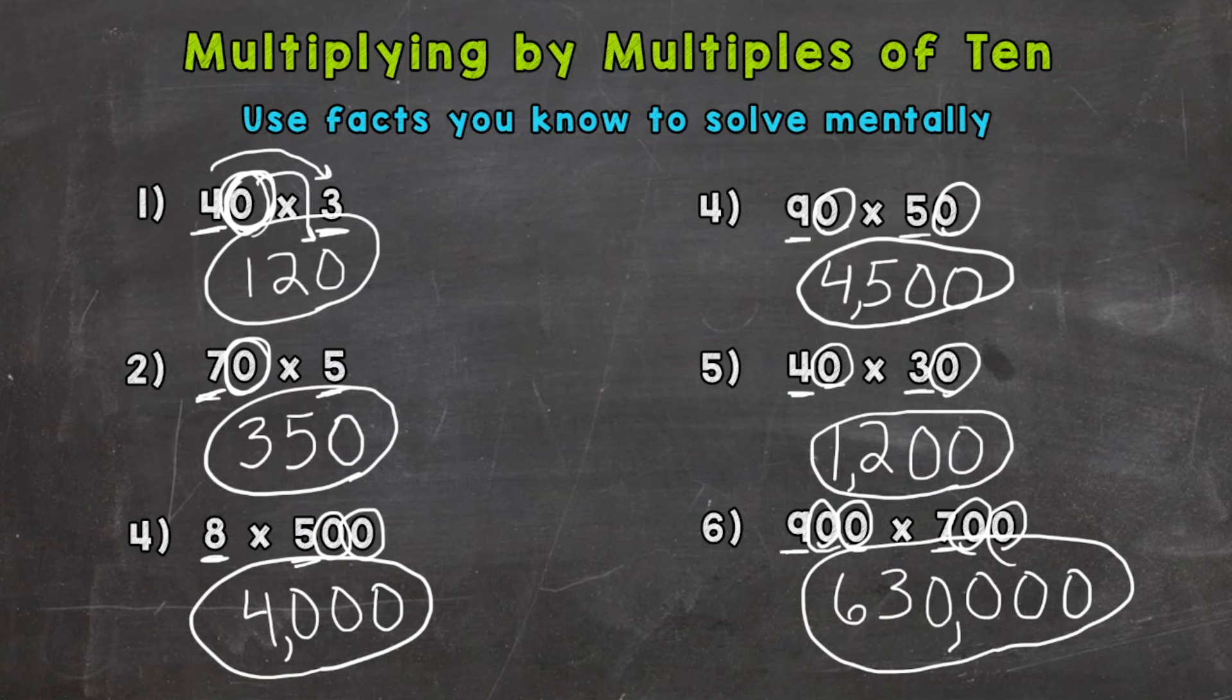So again, use the facts you know, and then use the zeros from the original problem in your answer to push the answer of that fact to the correct place value. And that's how you can use some mental math strategies to solve multiplying by multiples of 10 problems.